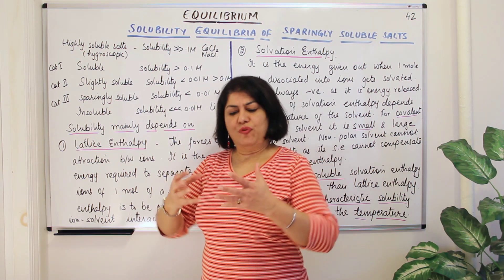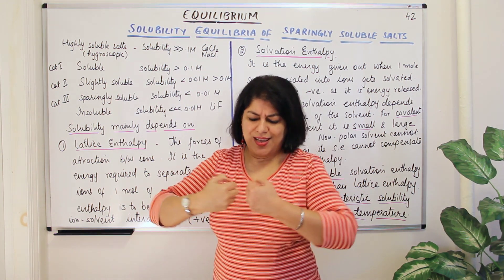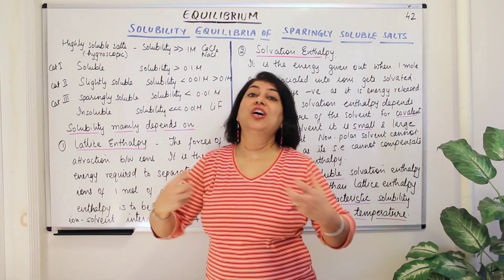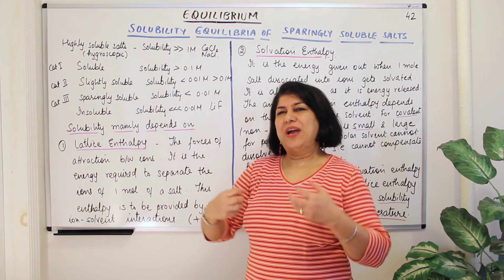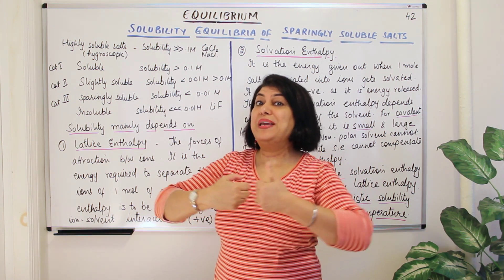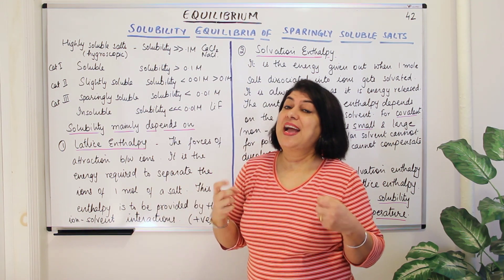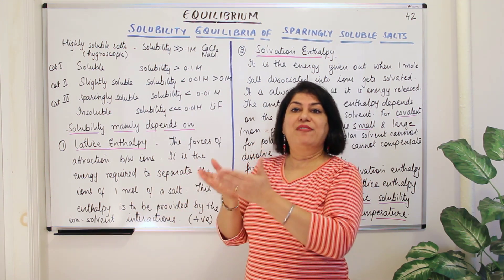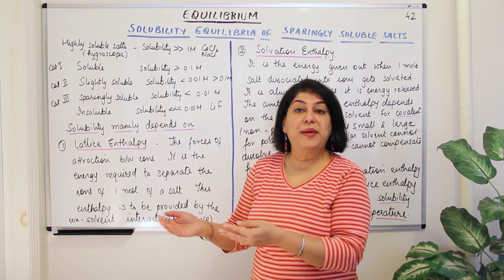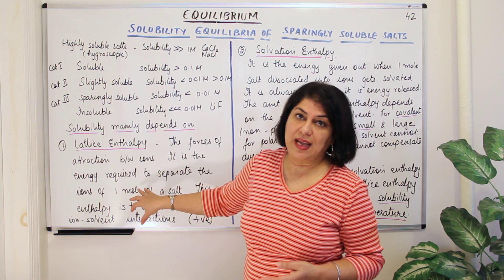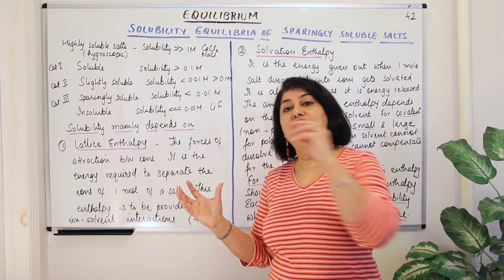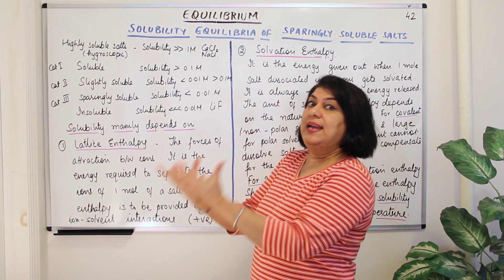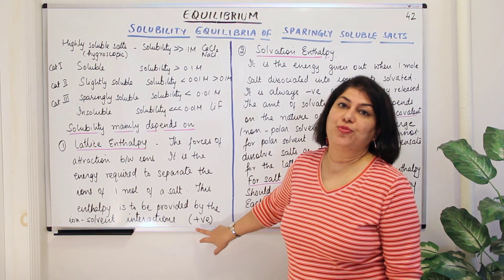Lattice enthalpy represents how strong the attraction between the ions is. Whenever you are using energy to carry out a process, you are providing energy to the system — the energy is said to be positive. But all chemical processes usually take place in order to acquire stability, so if you are putting in energy, there must be something which releases more energy so that on the whole the process leads to stability, which according to thermodynamics is a state of lower energy.